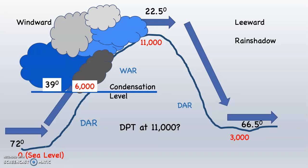What about at 11,000 feet at the top of the mountain? Is there a cloud? Yes. If there's a cloud, the relative humidity is 100%. If the relative humidity is 100%, the air is saturated. If the air is saturated, the air temperature and the dew point temperature have to be the same number, which means the dew point temperature must be 22.5 degrees — which is exactly what it is.